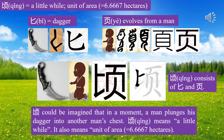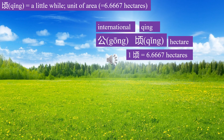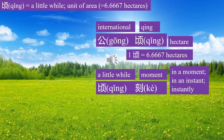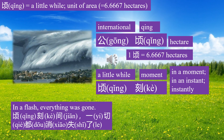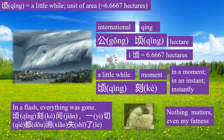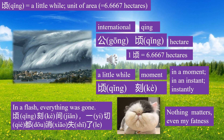Character 顷 means a little while and unit of area. 公顷 means hectare. 顷刻 means in a moment. 顷刻间，一切都消失了 — in a flash, everything was gone. Nothing matters, even my fatness.